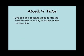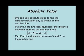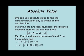We can also use absolute value to find the distance between any two points on the number line. If a and b are two real numbers, the distance between them on the number line is the absolute value of a minus b, which also equals the absolute value of b minus a. For example, the distance between negative 3 and 7: the absolute value of (negative 3 minus 7) equals the absolute value of negative 10, which equals 10. Reversing the order, the absolute value of (7 minus negative 3) equals the absolute value of 10, which also equals 10.